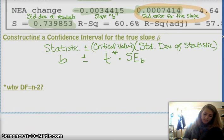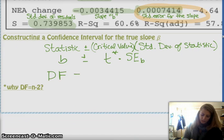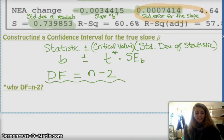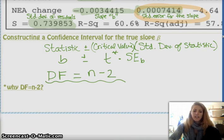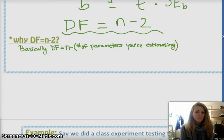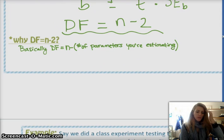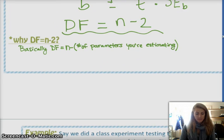Your degrees of freedom in this case, instead of, similar to means, it's a little different than the means, instead of n minus 1, it's n minus 2 is your degrees of freedom. So, if your sample size is 30, your degrees of freedom is 28. And you may be wondering why is your degrees of freedom n minus 2? And basically, that comes into play because your degrees of freedom is really n minus the number of parameters you're estimating. So when you're doing a test for the means, you're only estimating mu. In this case, you're estimating beta and alpha.